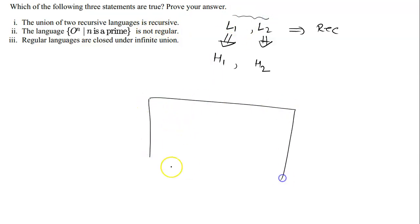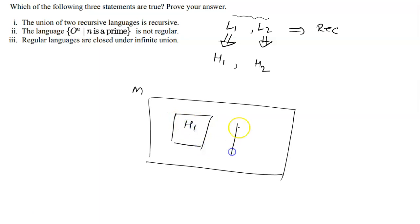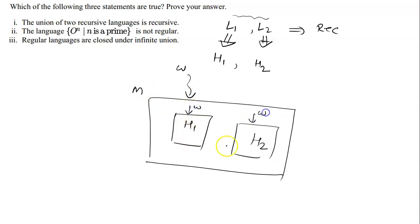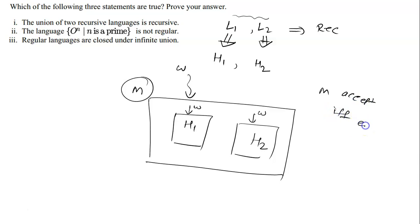We will make a new Turing machine M. This machine will run H1 and H2 in parallel. Whatever string w you give, H1 will run on w and H2 will also run on w in parallel. If at least one of them accepts w, then M will also accept. So M accepts if and only if at least one of H1 or H2 accepts.